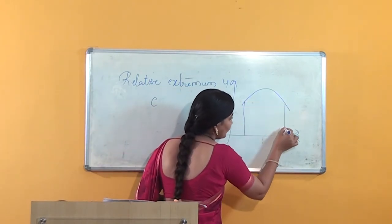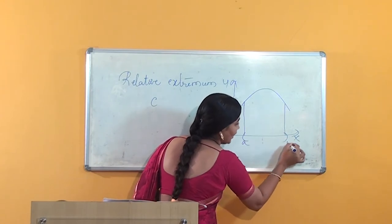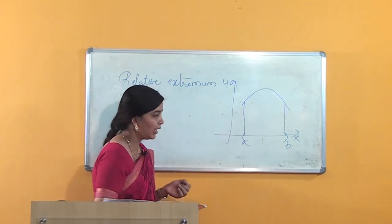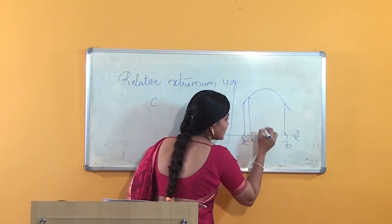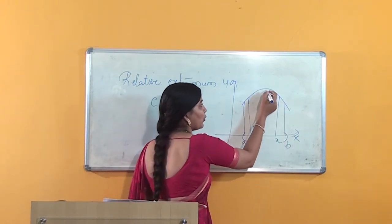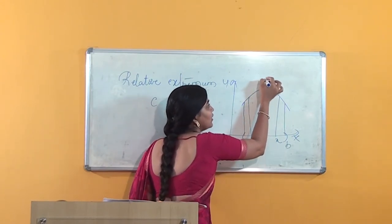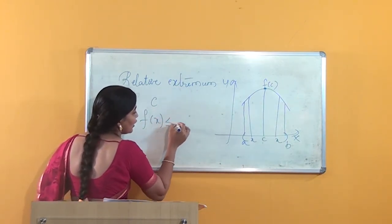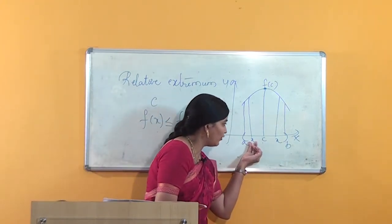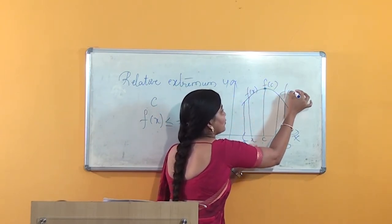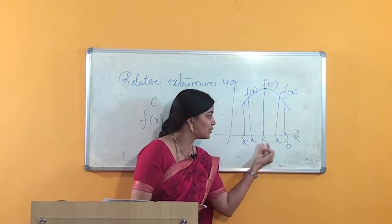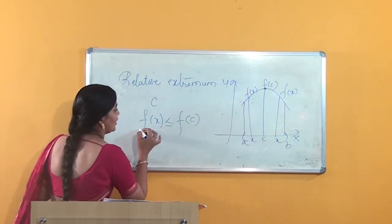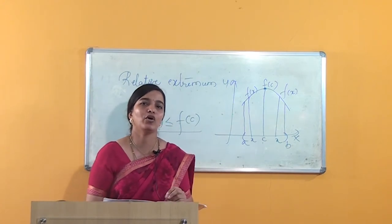I will consider the open interval A and B. You know the meaning of open interval — the endpoints are not considered, only the points between A and B are considered. I will also consider a point c. At this point c, I can say there is a maximum value when f(x) is less than or equal to f(c). If all the function values within this open interval (a, b) are less than the function value at c, that is f(c), then it is said to have the relative maximum value, or local maximum value.